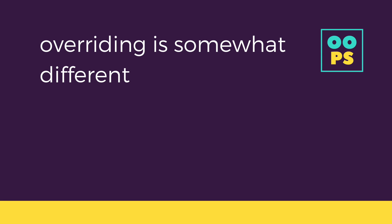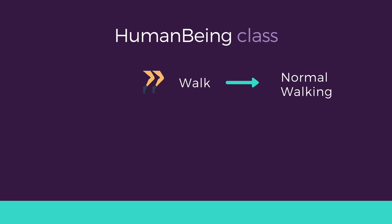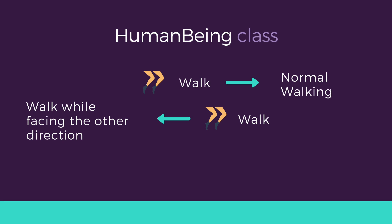Overriding is a little different. If the defined way of walking is that everyone walks in the direction of their face, but someone asks you to walk and you start walking backwards — you're still walking, but differently. This is overriding. When you change the mechanism of a function, it is called overriding.